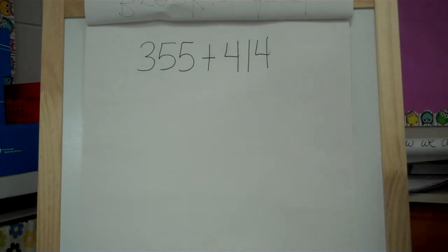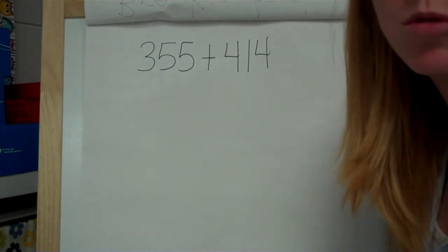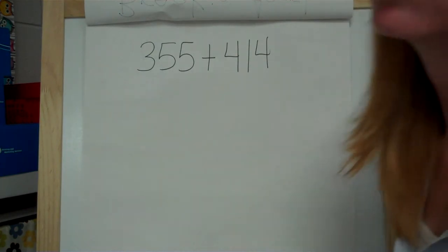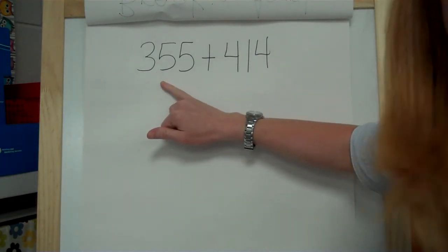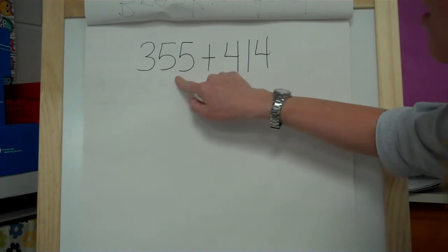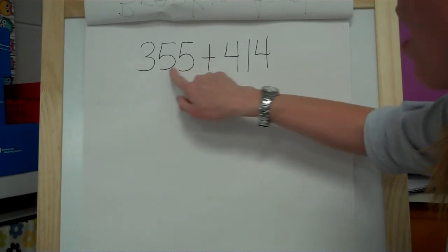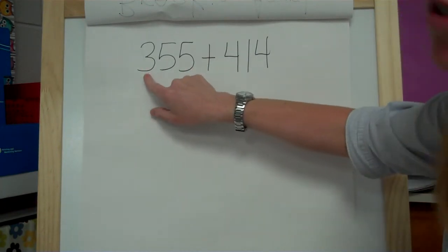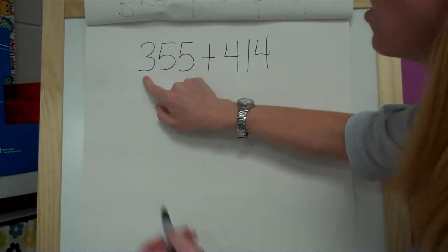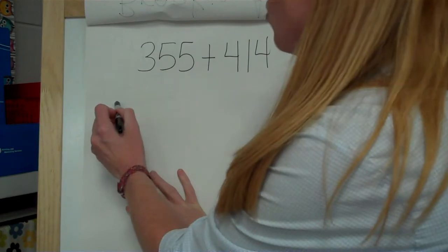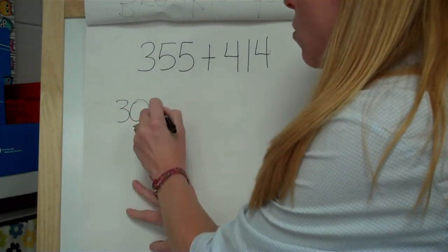Now, earlier in class we learned about breaking down numbers to expanded form. So that's kind of what we're going to do. We're going to look at these numbers here and I'm going to pull apart the place values. So this 3, as we know, is not just a 3 because it's in the hundreds place. So the value of that 3 is actually 300.